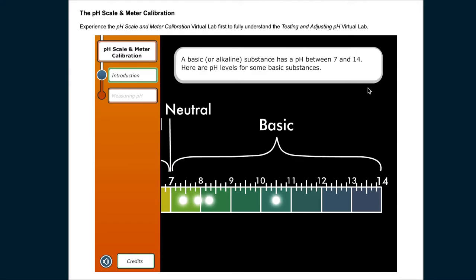A basic or alkaline substance has a pH between 7 and 14. Here are pH levels for some basic substances.